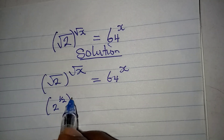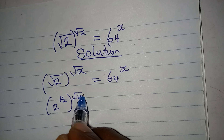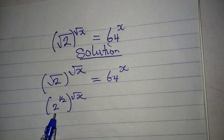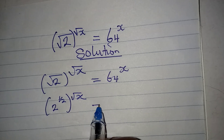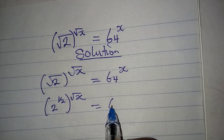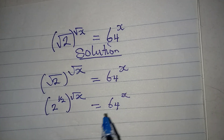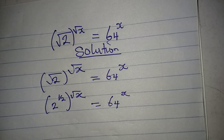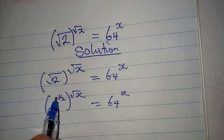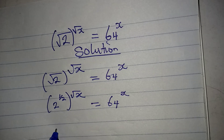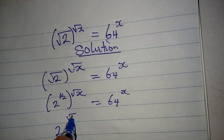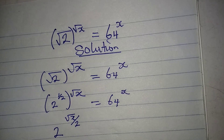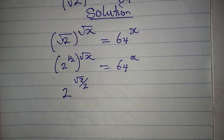This is the same as 2 to the power of 1 over 2, to the power of square root of x, because 2 to the power of 1 over 2 is the same thing as square root of 2. This equals 64 to the power of x. The next thing is to multiply the powers, so we have 2 to the power of square root of x over 2.